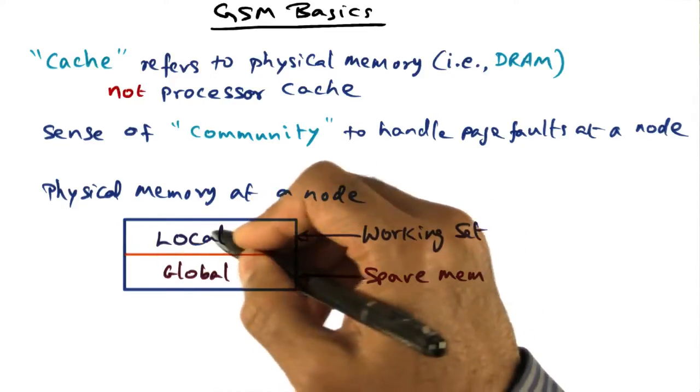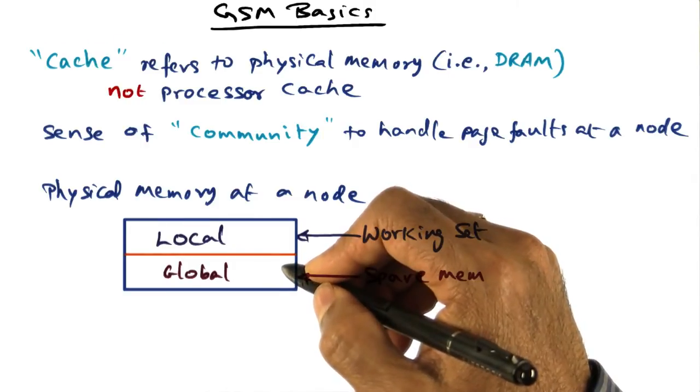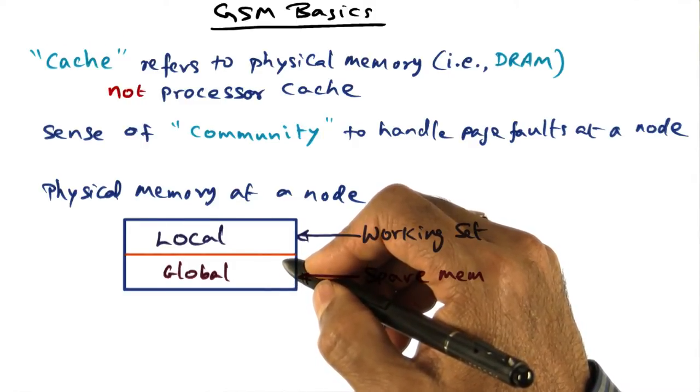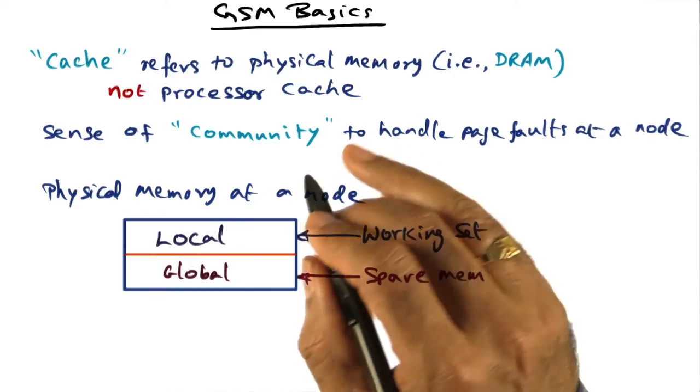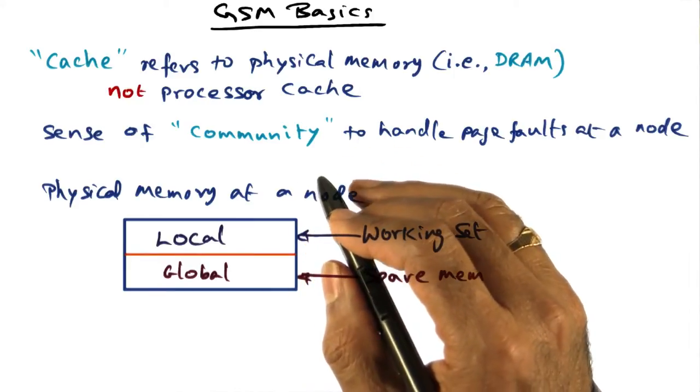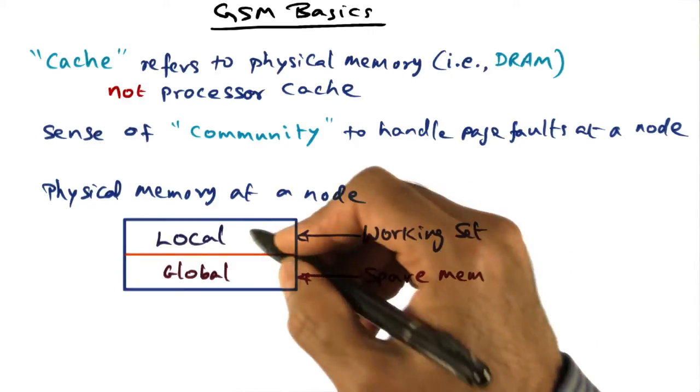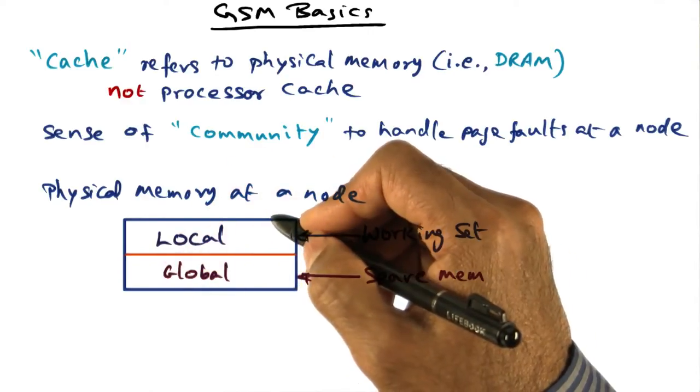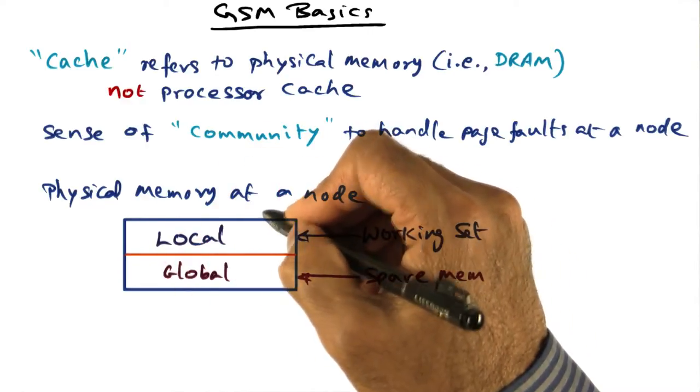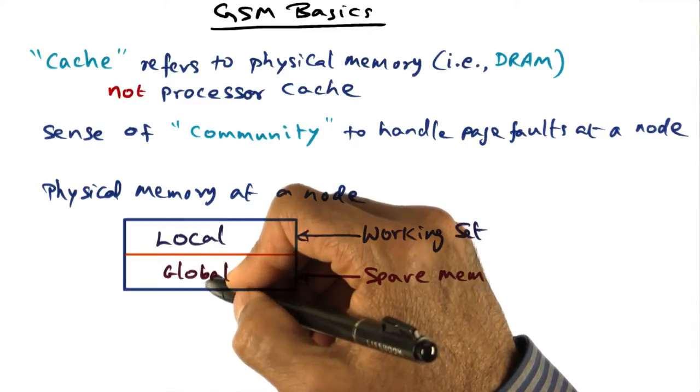And this split of local and global is dynamic in response to memory pressure. As I mentioned earlier, the memory pressure is not something that stays constant. So over time, depending on what's going on in a particular node, you may have more need for holding the working set of all your processes, in which case the local part may keep increasing.